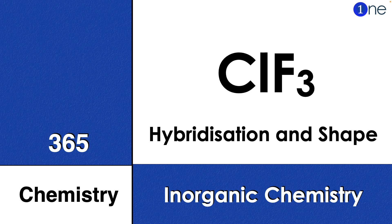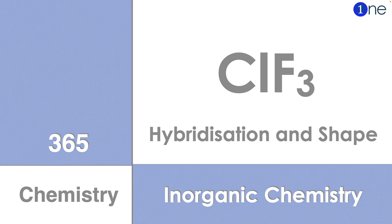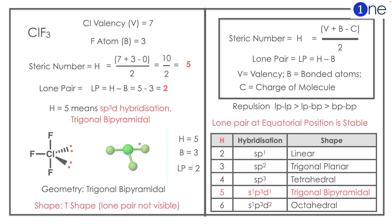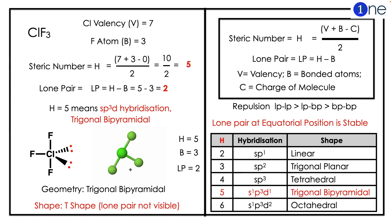You should find hybridization and shape of it. To find the hybridization, you should know the steric number. Steric number is H equals (V + B - C) divided by 2. If you substitute in the formula, chlorine is...